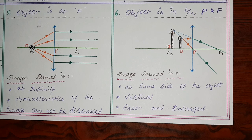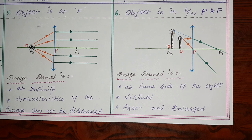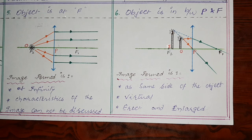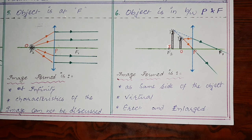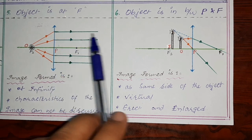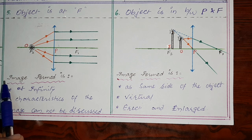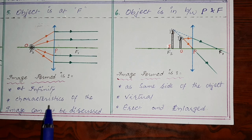In the fifth position, the object is kept at the focal point. All the light rays emitting from the focal point strike the lens, refract, and continue to travel parallel to the principal axis. All the parallel rays continue to travel up to infinity, so the image is formed at infinity. The characteristics of the image cannot be discussed.